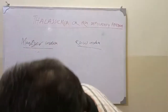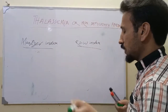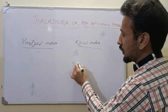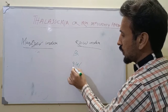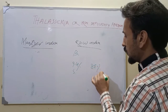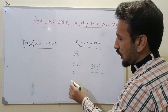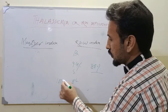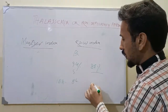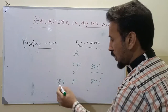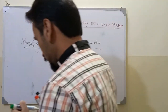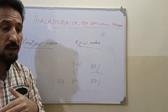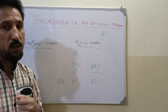The Red Cell Distribution Width Index has a sensitivity of 94% and specificity of 88% for beta thalassemia trait, while it has a sensitivity of 86% and specificity of 84% for iron deficiency anemia. This is very helpful in the differentiation of iron deficiency anemia and thalassemia using the blood CP. Thank you very much.